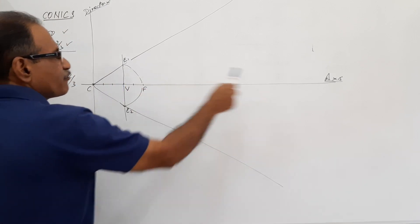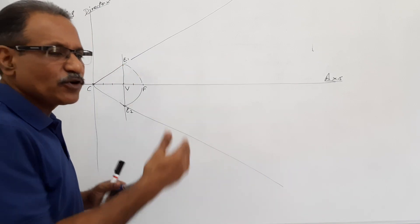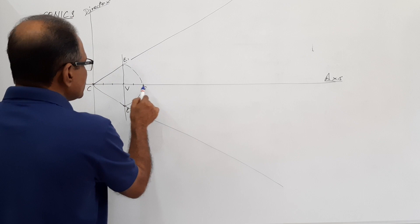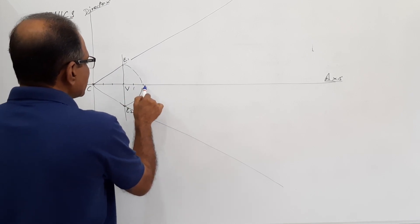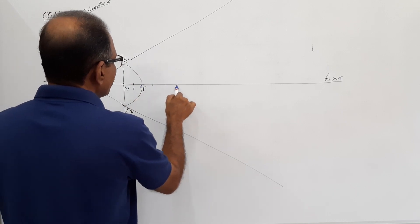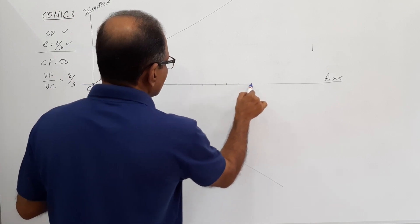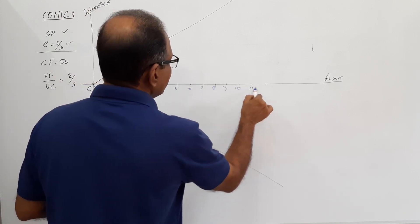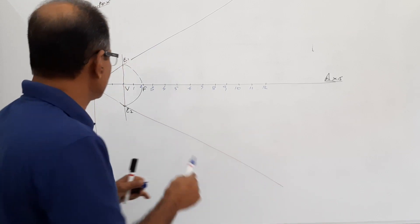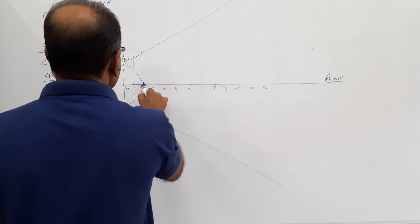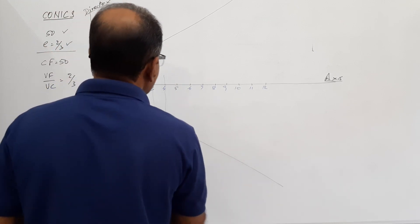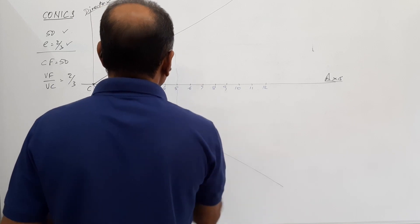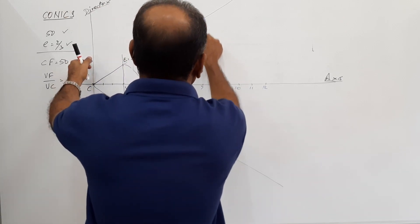To the right of V, take certain points. If you take the points at equal intervals it will be nice. Take about 1 centimeter gap. Take points 1, 2, 3, 4, 5, 6, 7, 8, 9, 10, 11, 12. You can take 12, 13 or whatever — I assume 12 will be sufficient. Draw very light vertical lines through them, perfectly vertical and parallel to the directrix.